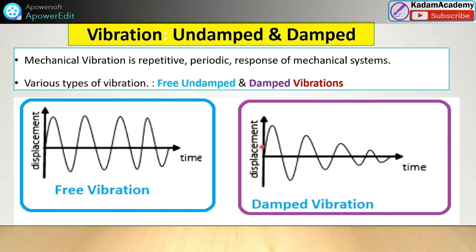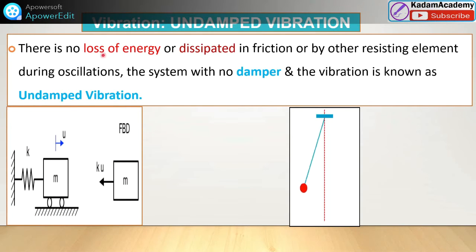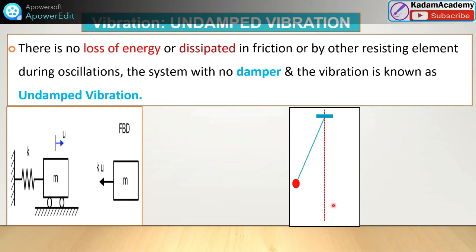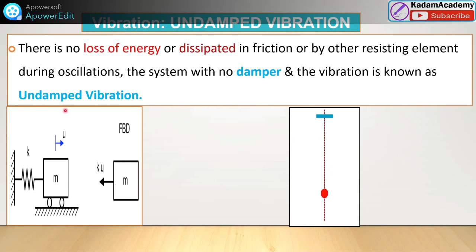In damped vibration, the amplitude goes on decreasing slowly. That is the key difference. The amplitude decreases because there is resistance to the motion provided by dampers — either internal or external resistance. In undamped vibration, there is no loss of energy dissipated due to friction or any resisting element during oscillation. The system has no dampers or internal/external resistance, which is why it is known as undamped vibration.